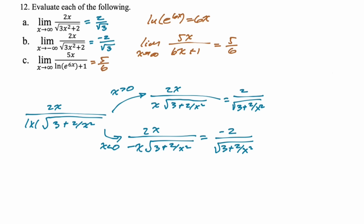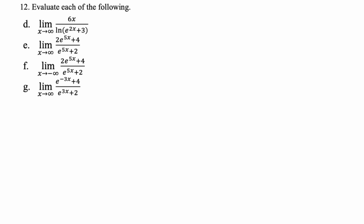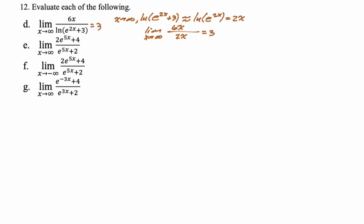This next one has ln(e^(2x) + 3) inside. On multiple choice, informally: as x → ∞, ln(e^(2x) + 3) ≈ ln(e^(2x)) = 2x, because the +3 becomes negligible. So the limit is essentially 6x/(2x) = 3. That's how I'd handle it on multiple choice.